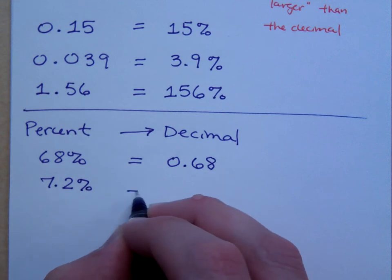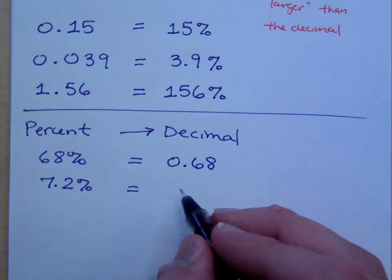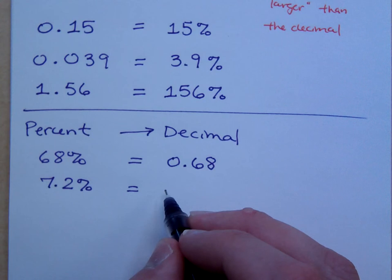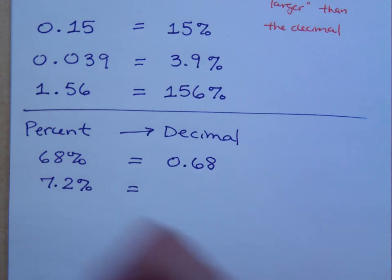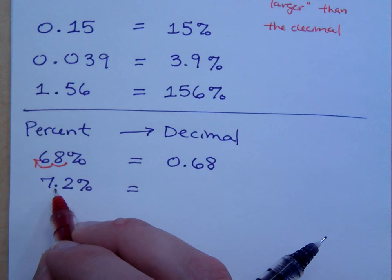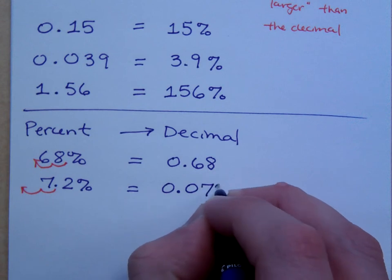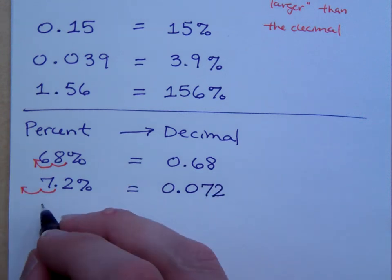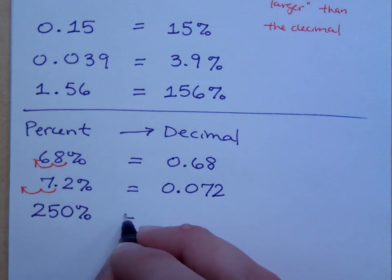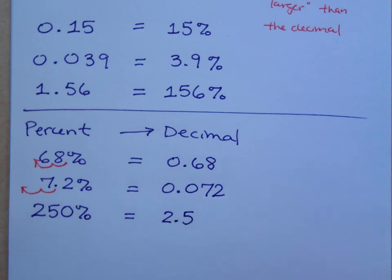7.2 percent is what as a decimal? The percent is supposed to look larger than the decimal. So which way does the decimal have to go here? It went two places to the left. Or if I have 250%, what is that? 2.5. Just 2.5. You could say 2.50, but 2.5 is good enough.